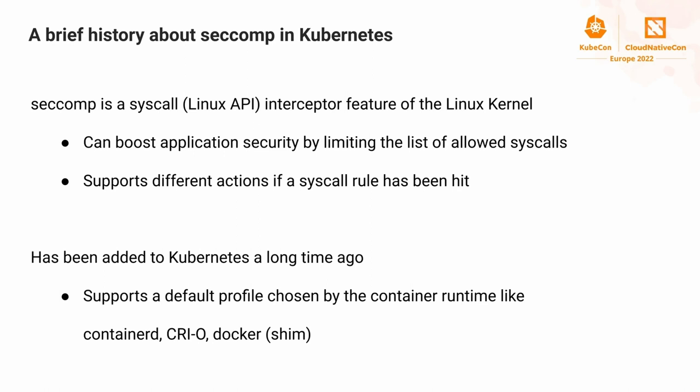Seccomp is a syscall interceptor feature for the Linux kernel. When your application makes a syscall, you can decide which action to take - for example, you can log the action, error out, or allow the syscall. This boosts application security by limiting the list of allowed syscalls. You can maintain an allow list or a block list, and also fine-grainedly define what error code should be returned when a syscall is disallowed.